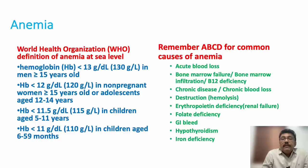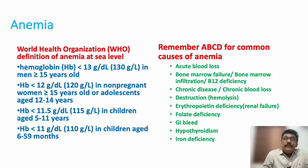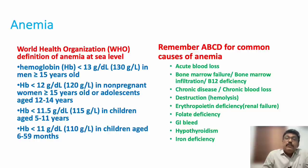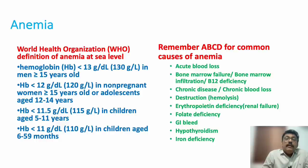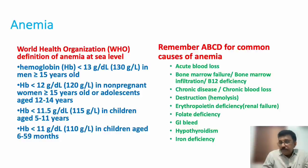Erythropoietin deficiency is mainly seen in chronic renal failure, since erythropoietin is produced in the kidney. Folic acid deficiency is seen in patients on methotrexate; sulfonamides and many cancer drugs can also cause it. GI bleed from ulcers or hookworm and hypothyroidism can also cause bone marrow suppression. Iron deficiency is one of the major causes of anemia worldwide — hookworm infestation is the major cause in children.